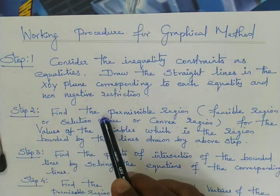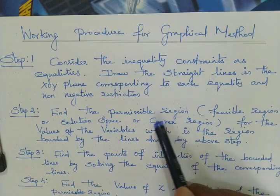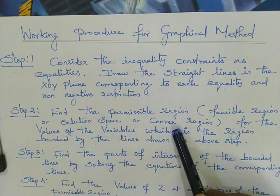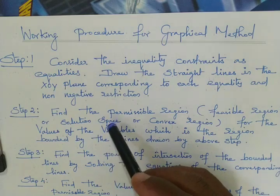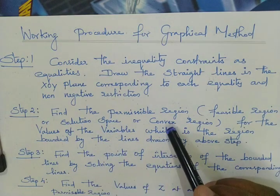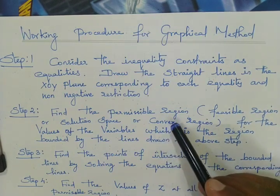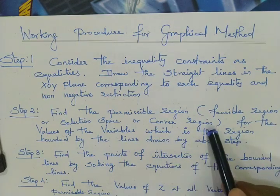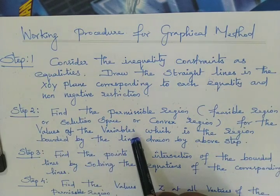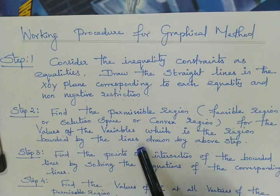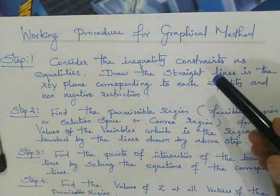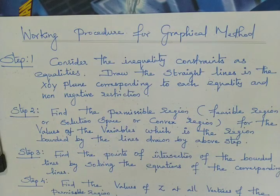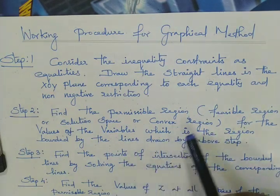Step number two: find the permissible region — meaning the feasible region, also called the solution space or convex region. Solution space means where the solutions exist. First we find out the solution space by using the constraints. Convex means the set of points such that if you join any two points, the line lies inside the region — that region is called the convex region. The permissible region is the region bounded by the lines drawn in step one. By plotting the points found from the constraints, you obtain one region — that region is the feasible region.